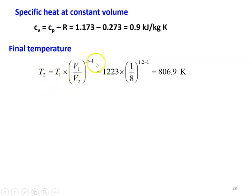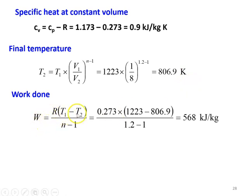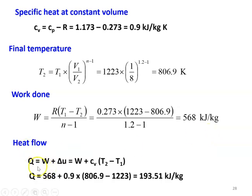The final temperature for the polytropic process: T2 equals T1 into (V1/V2) to the power (N minus 1). The volume ratio V2/V1 is 8, so V1/V2 is 1/8. T1 is 1223 K (950°C + 273). So T2 equals 1223 into (1/8) to the power 0.2 equals 806.9 Kelvin. Work done: W equals R into (T1 minus T2) divided by (N minus 1) equals 0.273 into (1223 minus 806.9) divided by 0.2 equals 568 kilojoules per kilogram. Heat flow from first law: Q equals W plus delta U equals W plus Cv into (T2 minus T1) equals 568 plus 0.9 into (806.9 minus 1223) equals 193.51 kilojoules per kilogram.